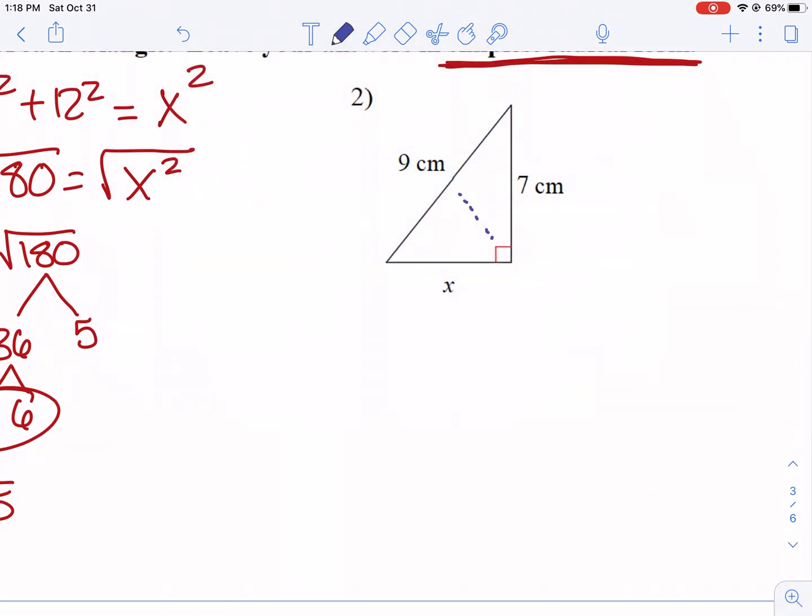So that's why we're simplifying the radical. If I look at this second example here, we see that 9 is the hypotenuse. So one of my legs is x this time. We're going to have x squared plus 7 squared, and it's going to equal 9 squared. So x squared plus 49 equals 81. We're going to subtract 49. So x squared equals 81 minus 49, so 32.